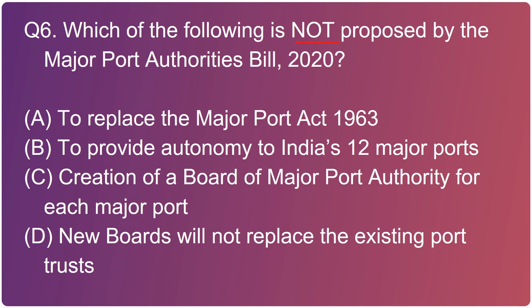Moving to the sixth question: which of the following is NOT proposed by the Major Port Authorities Bill 2020? It is option D - new boards will NOT replace the existing port trusts. In fact, every port will have a port authority under a port authorities board as a central board, and the existing port trusts will be replaced by these boards. The board will comprise a chairperson, members from respective state governments, representatives from the Defense Ministry, Railway Ministry, and Customs Department. The Chairman is appointed by the central government. It will also provide autonomy to major ports like Visakhapatnam, Mumbai, Kolkata, Kandla, Jawaharlal Nehru Port, Chennai, etc.